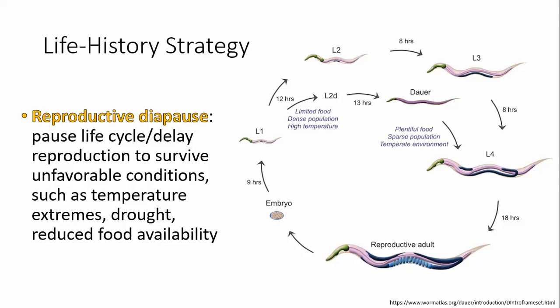When resources are lean — not enough water, extreme temperatures, or insufficient food — reproducing is risky because offspring may die, wasting energy. Some organisms can go through reproductive diapause, literally pausing their life cycle to delay reproduction. C. elegans, a type of worm heavily used in research, can enter reproductive diapause when exposed to limited food, very dense population, or high temperatures, then resume reproduction once proper living conditions return.